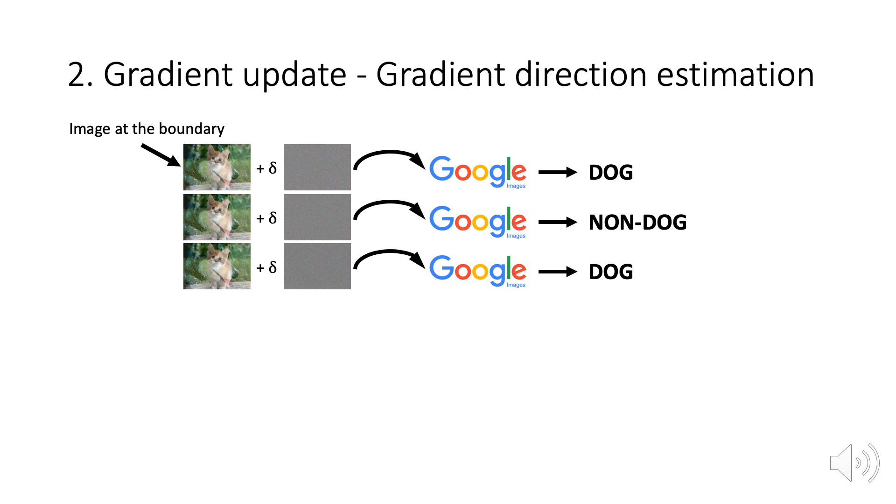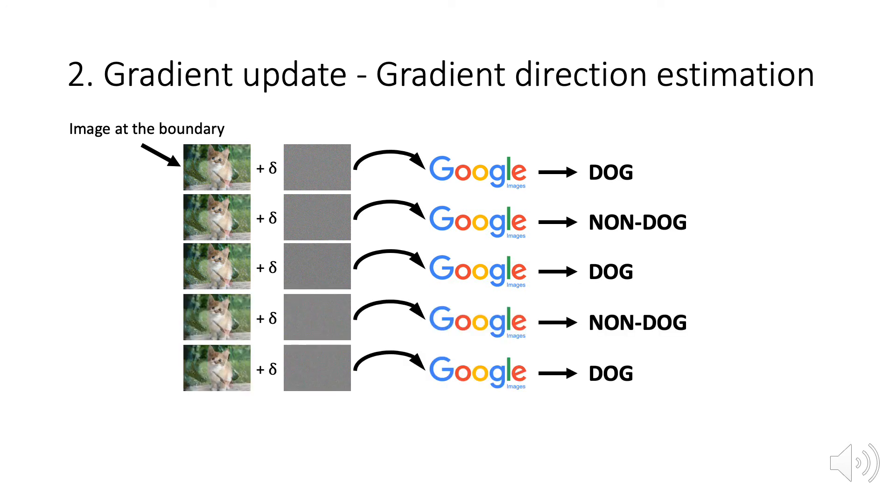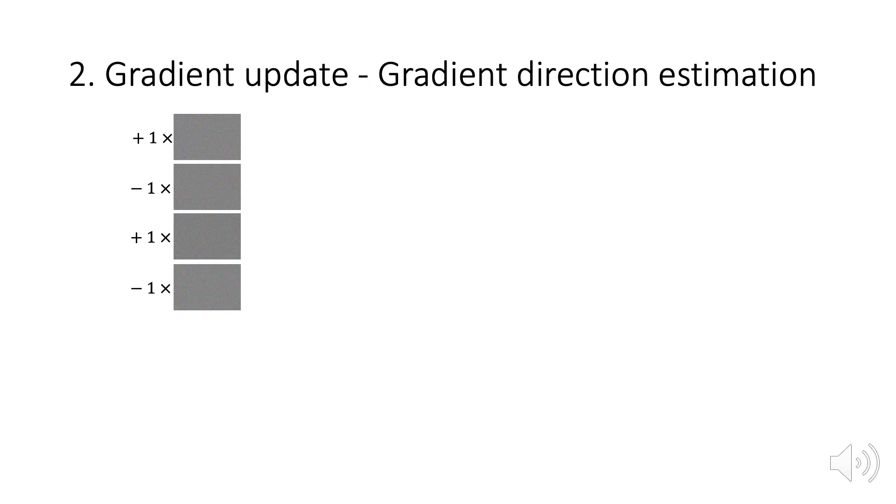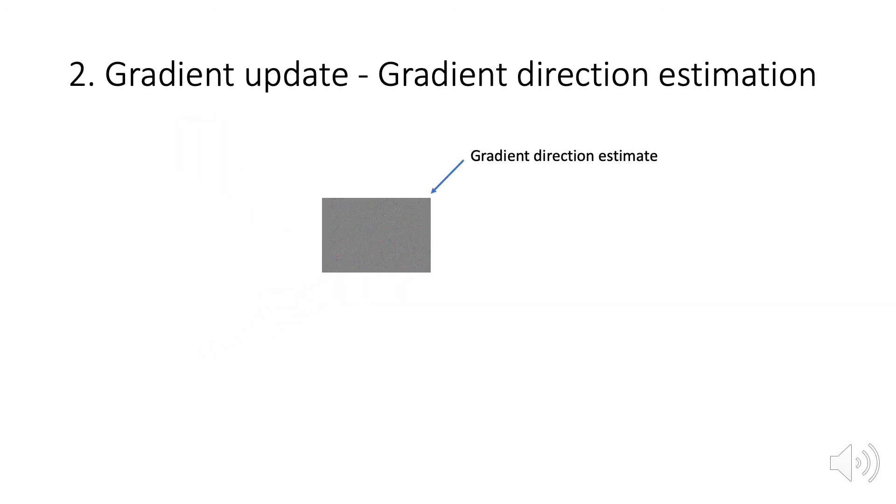In the gradient update step, we first add small random perturbations to the image at the boundary and then feed them to the model. Based on the labels, we multiply each noise with positive or negative 1 and sum them together to get the gradient estimate.